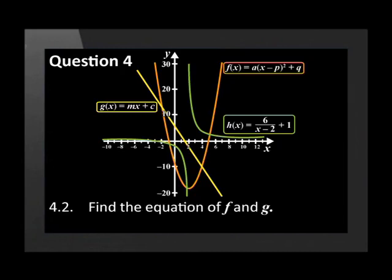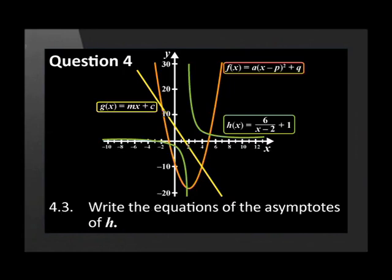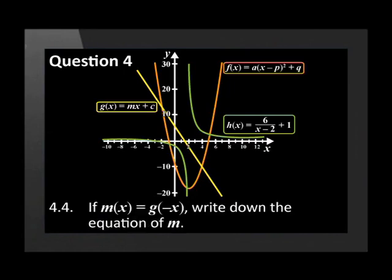Find the equation of f and g. Write the equations of the asymptotes of h. If m(x) is equal to g(negative x), write down the equation of m.